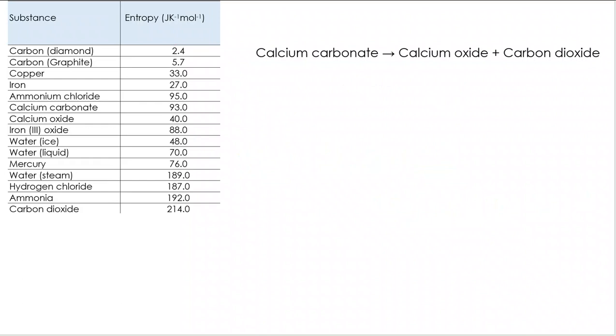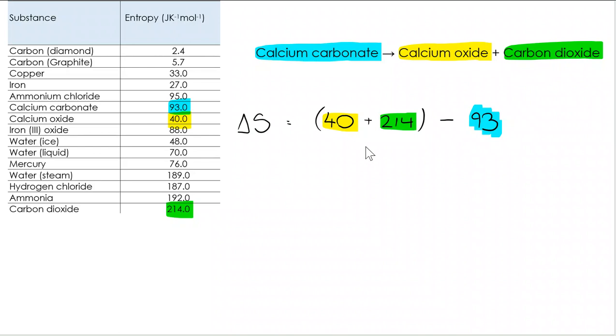Next one. Well if you looked at the symbol equation here, it would be one mole of calcium carbonate makes one mole of calcium oxide and one mole of carbon dioxide. So you don't need to multiply any of the values. If I do my delta S calculation, you can see the color coding. My 40 plus 214 is my entropy of products, I'm taking away my entropy of reactants, giving me an entropy change of plus 161 joules per kelvin per mole. We've gone from one mole of solid to one mole of solid and one mole of gas. Of course it's more disordered, of course we would expect an increase in entropy.